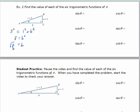I can simplify the square root of 8 as 2 square roots of 2. Then we'll write our six trigonometric functions and rationalize our answers. I'll put 2 square roots of 2 in for b. The sine is the opposite over the hypotenuse, which is 1 third. The cosine is the adjacent over the hypotenuse, which is 2 square roots of 2 over 3. The tangent is the opposite over the adjacent, which is 1 over 2 square roots of 2.